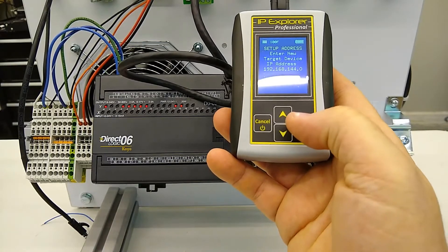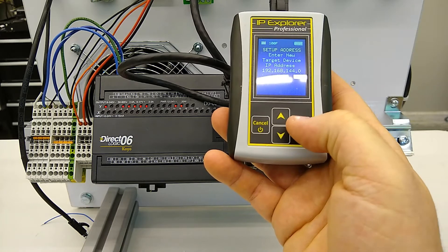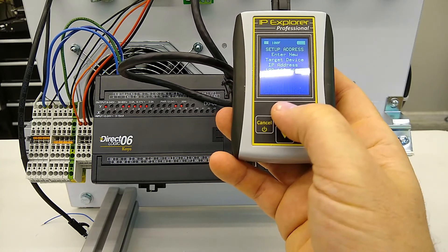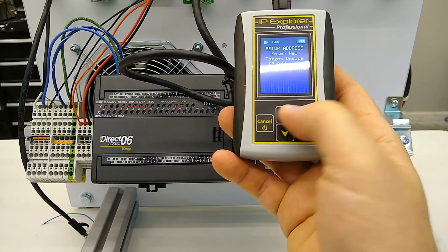And then we're going to go to new target address. The first three octets are going to default to that 192.168.144 of the IP Explorer, so we just need to set that fourth octet, which we're going to set to 10.